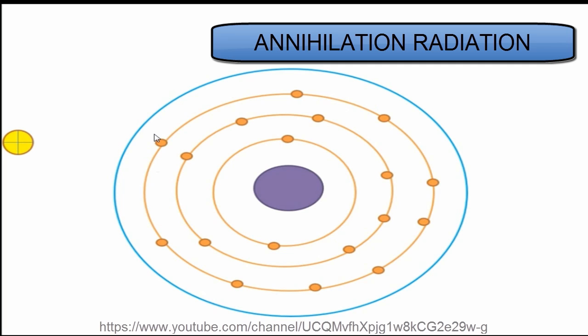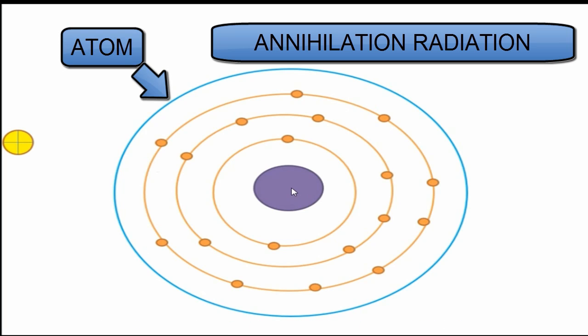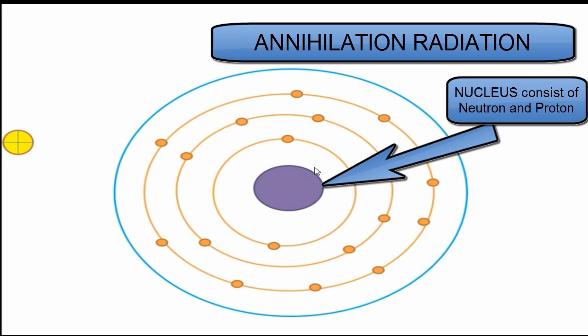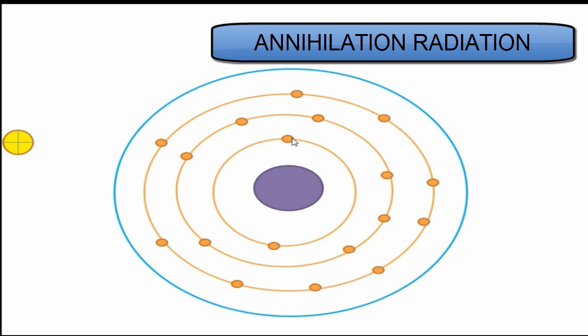Now I will explain annihilation radiation in much more detail in this tutorial. You see, this blue one represents the atom, and the center one represents the nucleus which consists of protons and neutrons, and the outer part represents the shells which consist of electrons.